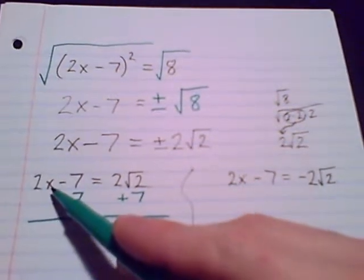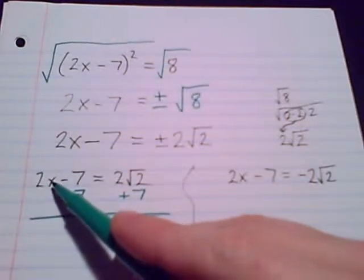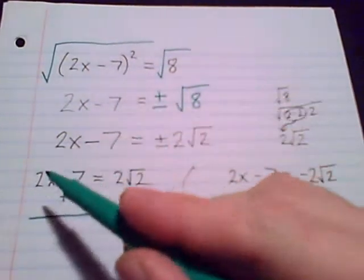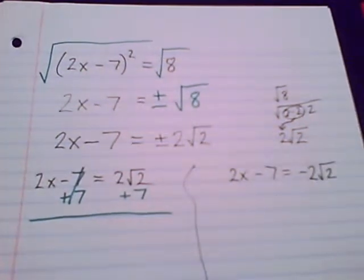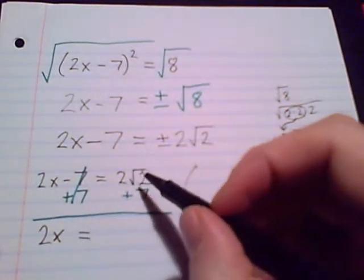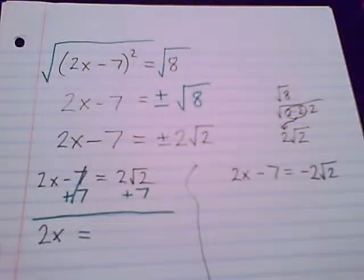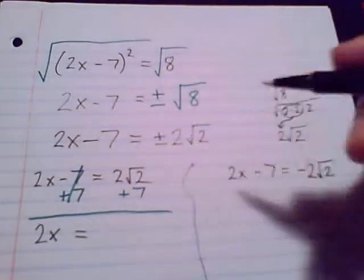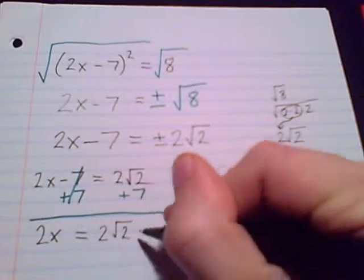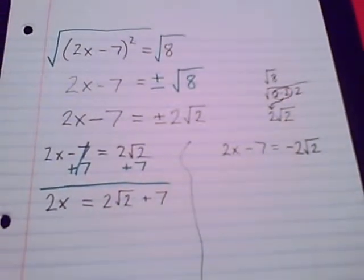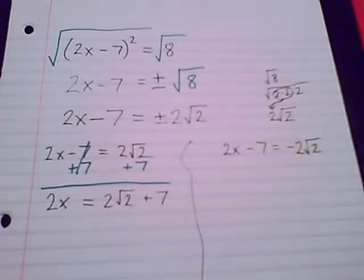I'm focusing on the left side because that's where the variable is, and I want to get x by itself — that's how I solve these linear equations. I'm not focusing on the 2 radical 2; I'm choosing what to do based on the left side. So I add 7 to get rid of the minus 7. Now, 2x equals — and I need to be cautious here about adding radicals. Adding radicals is a combine-like-terms idea: the terms need to have the same radical part. I've got one term with radical 2, and the other has no radical — it's just positive 7. They are not like terms and really cannot be combined. I have to keep them separate: 2 radical 2 plus 7.